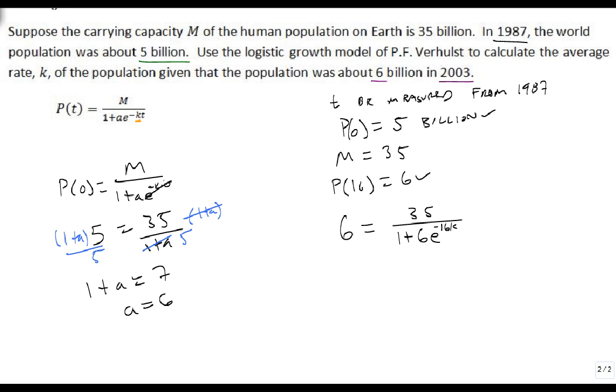So, from this point, we're going to multiply both sides by 1 plus 6, times E to the minus 16K. So, we'll distribute the 6 through, so we end up with 6 plus 36, E to the minus 16K equals 35.